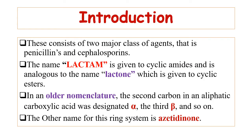Examples of antibiotics that fall under the class of beta-lactam antibiotics are penicillin and cephalosporin. The term 'lactam' is used for cyclic amides — amides in which a cyclic ring structure is present. The term 'lactone' is used for cyclic esters.